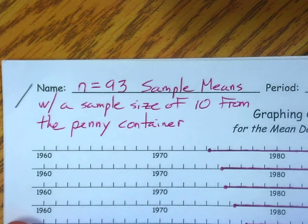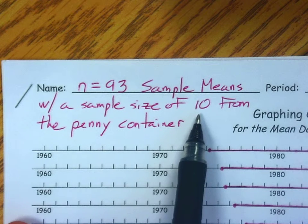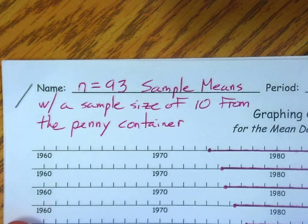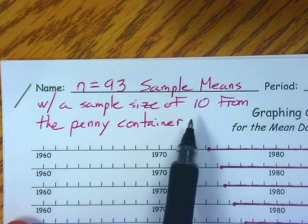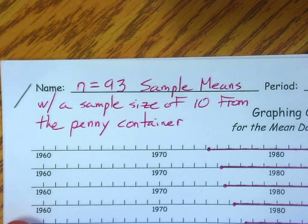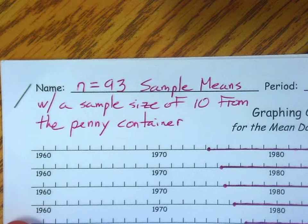The central limit theorem doesn't really apply here because 10 is a relatively small sample size. We saw in our simulation that normality is approximate using a sample size as small as 10, but we're not always guaranteed of that. The central limit theorem tells us: when the population is not shaped normally, the larger the sample size, the better the sample means are approximated by the normal distribution. We saw that 10 is somewhat close — far from perfect, but somewhat close — at least for the point of this illustration.